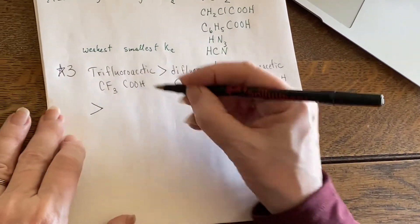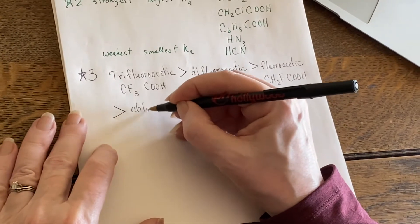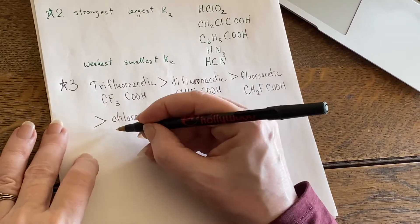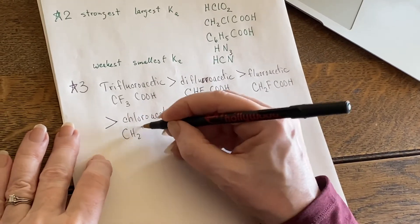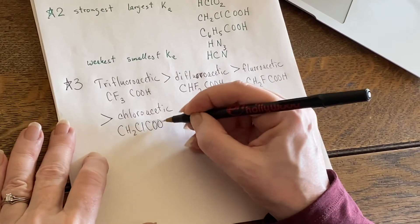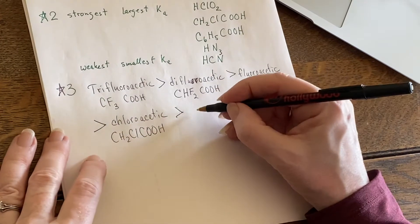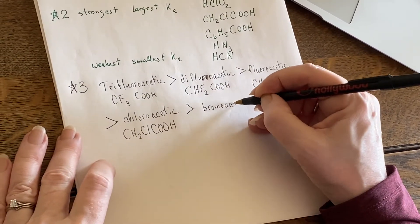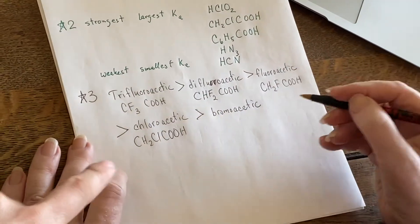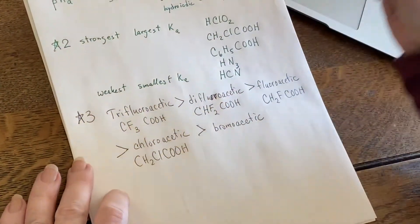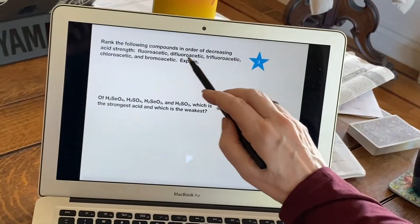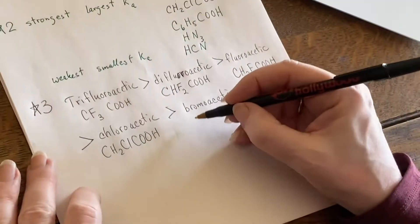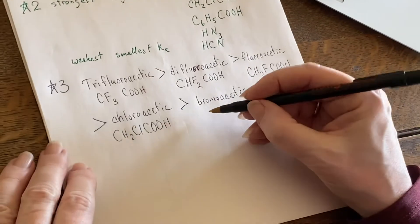And that will be stronger than the chloroacetic acid, and that will be stronger than the bromoacetic acid. Where's the dichloro? Again, we don't have a dichloro. We just have fluoro, difluoro, trifluoro, chloro, and bromo, because otherwise it starts to get too close to the same and then everybody's not quite sure.